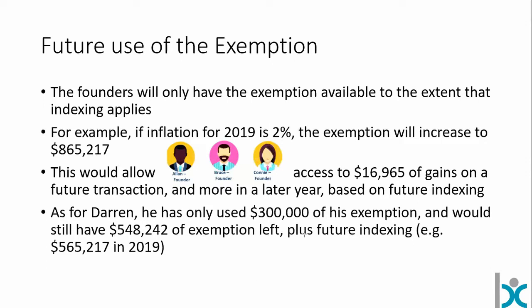Darren, on the other hand, has only used $300,000 of his exemption. He would still have $548,242 of exemption remaining, plus whatever future indexing applies. I hope that helps to get us started with the lifetime capital gains exemption — we've really just scratched the surface. There are many more rules, and you'll see it gets actually very challenging to use it. Scenarios where Alan, Bruce, and Connie can actually use their exemption are not all that common in small business sales. Thank you very much, and enjoy your continued studies.